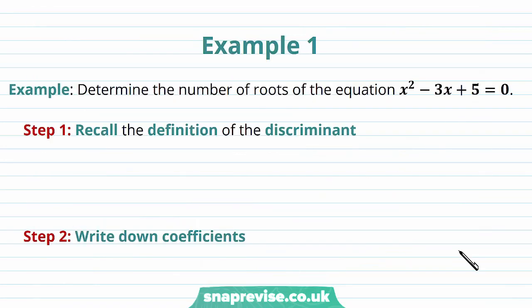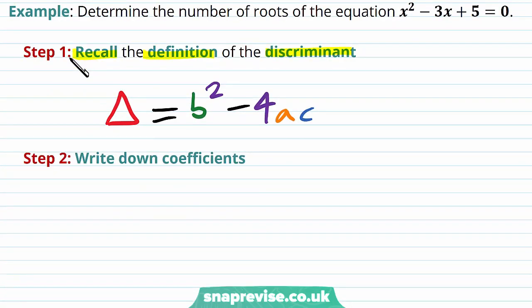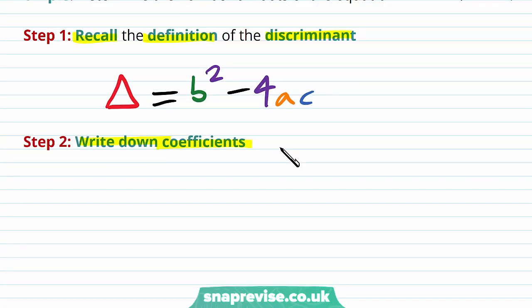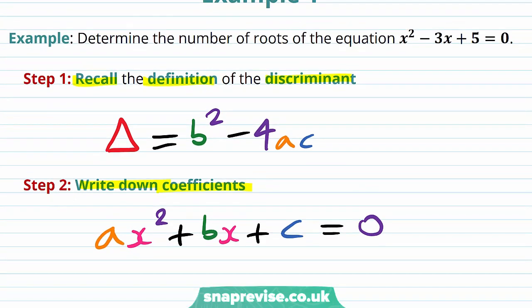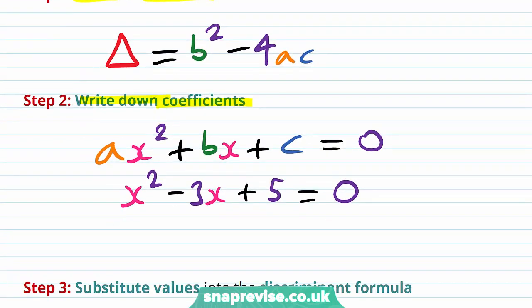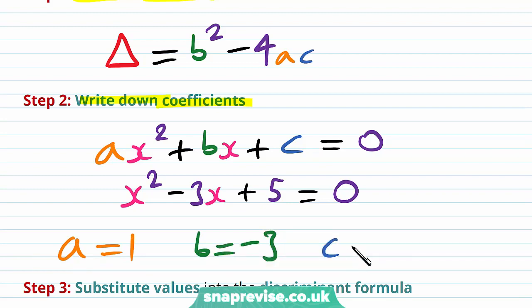Let's take a look at some examples. Our first example asks us to determine the number of roots of x squared minus 3x plus 5 equals zero. First, recall the discriminant: delta equals b squared minus 4ac. Next, write down the coefficients: comparing with ax squared plus bx plus c equals zero, we have a equals 1, b equals minus 3, and c equals 5.